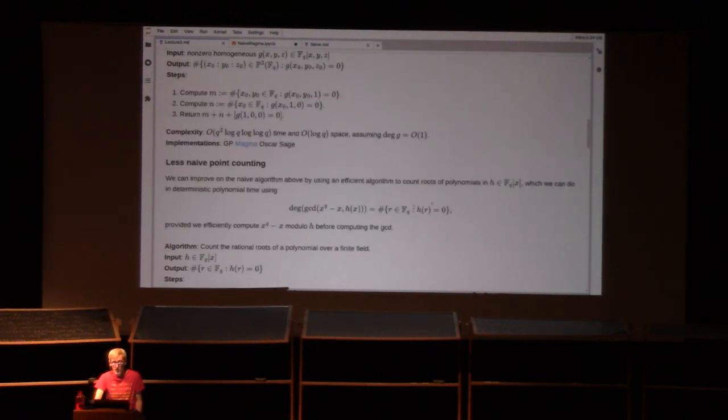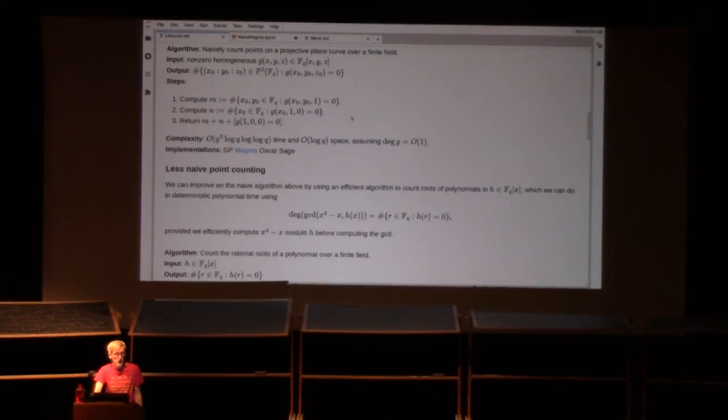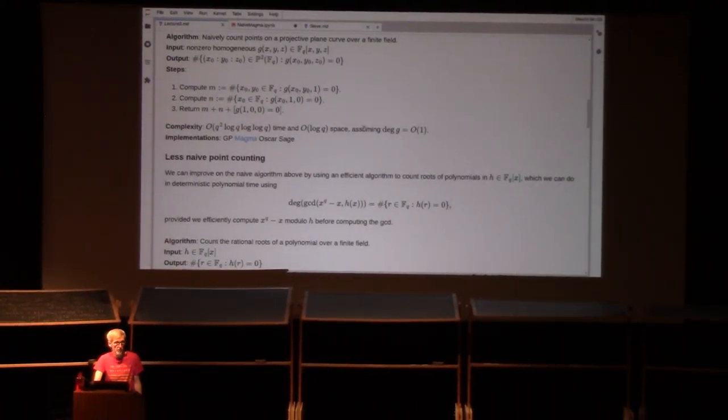That can be done very efficiently with a completely deterministic algorithm by computing the degree of an appropriate GCD. For any polynomial h, here h would be an instantiation of g(x, y_0, 1) for some y_0, we can compute the number of F_q rational roots as the GCD of x^q minus x with h. That's going to be some polynomial. Take its degree. The degree of that polynomial is precisely the number of roots. Why does that work? x^q minus x is really representing the action of Frobenius. To be F_q rational means precisely to be fixed under the action of the q power Frobenius automorphism of your finite field. That's why this works. I'll give you notes in the references where you can learn lots more about this algorithm and generalizations of it. I'll just ask you, if this fact isn't familiar to you, to accept it for the moment.